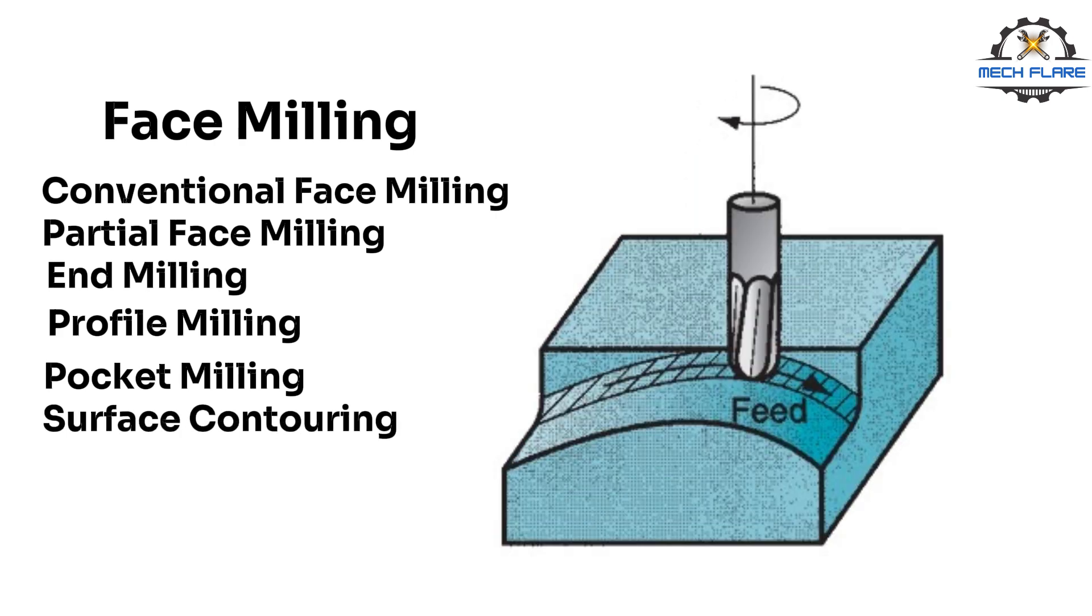Surface contouring is face milling in which a ball nose cutter, rather than square end cutter, is fed back and forth across the work along a curvilinear path at close intervals to create a three-dimensional surface form.